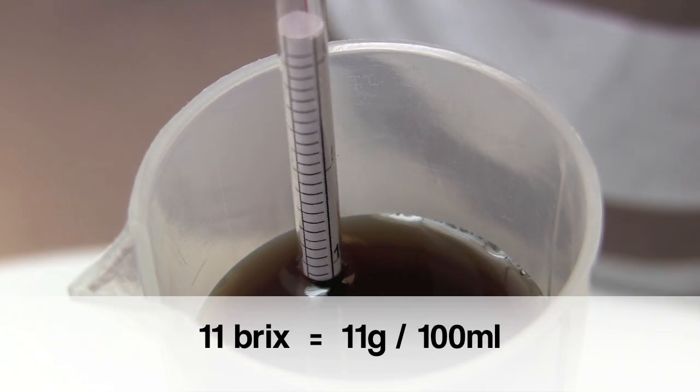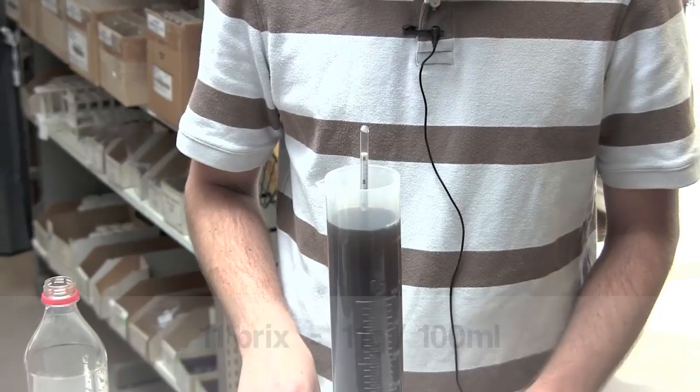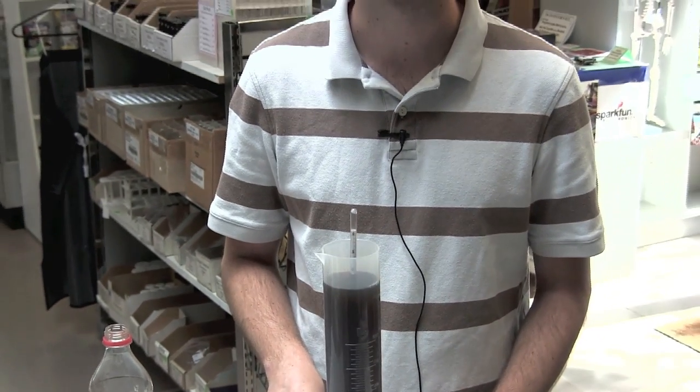11 is the amount of sugar in grams per 100 milliliters of your beverage. Finally you can use the following formula to calculate the total amount of sugar in your beverage.